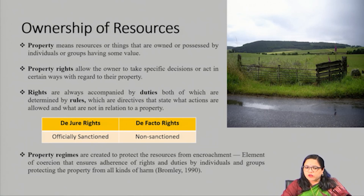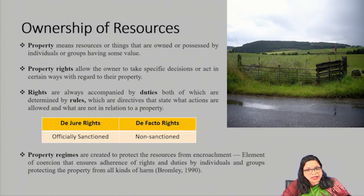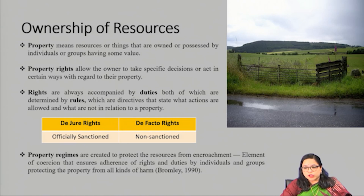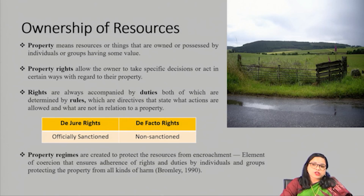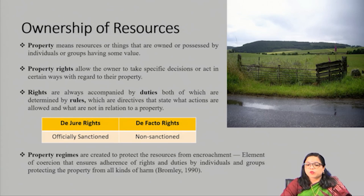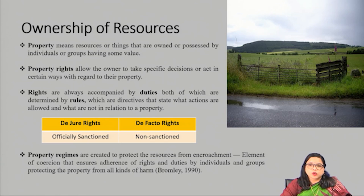Rights are always accompanied by duties, both of which are determined by rules. The duty of the owner of the house is to pay taxes to the government, not to encroach upon others' property, and to abide by the rules set by the government. These rules determine what actions are allowed and what are not in relation to the property. In Daniel Bromley's words, the essence of property rights is a structure of rights and duties that will give any particular benefit stream protection against adverse claims.